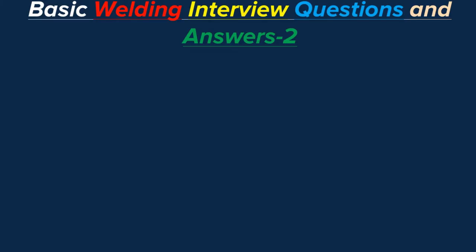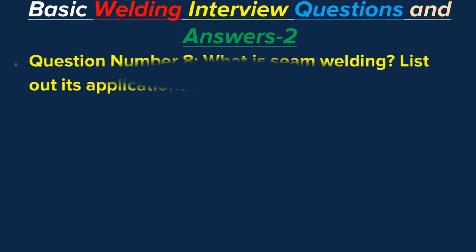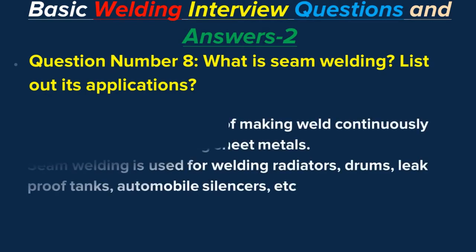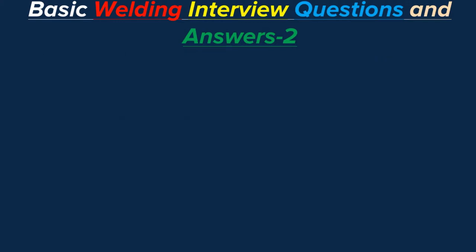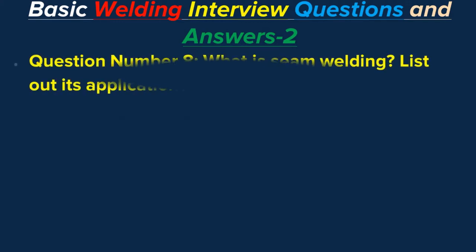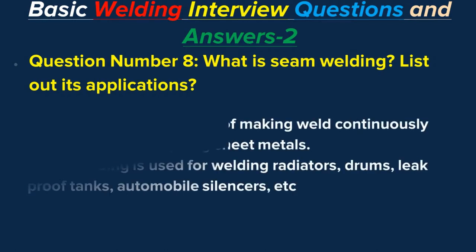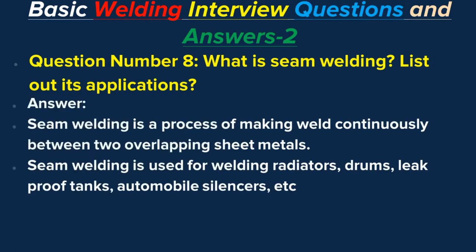Question number eight: What is seam welding? List out its applications. Answer: Seam welding is a process of making a weld continuously between two overlapping sheet metals. Seam welding is used for welding radiators, drums, leak-proof tanks, automobile silencers, etc.